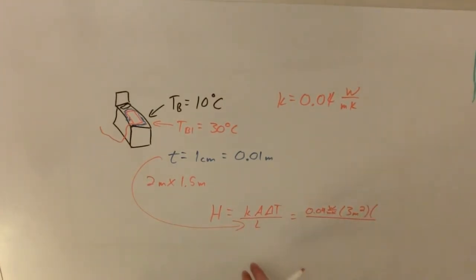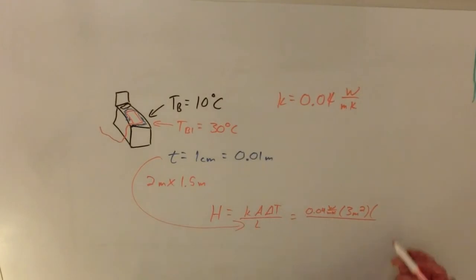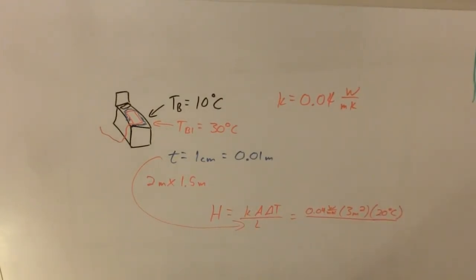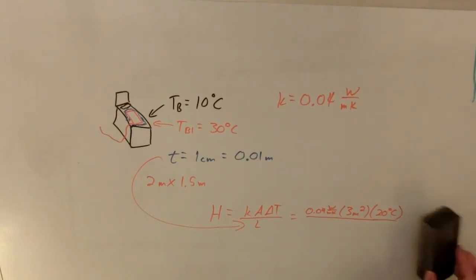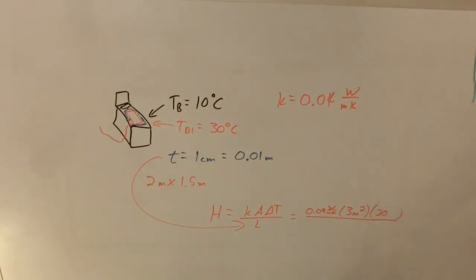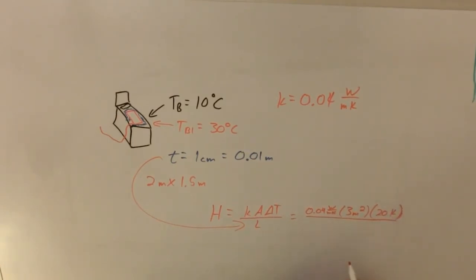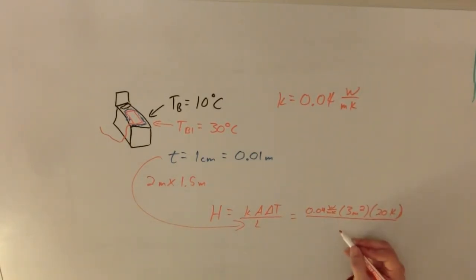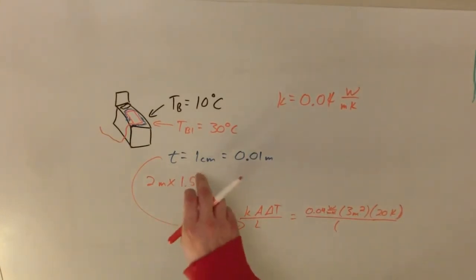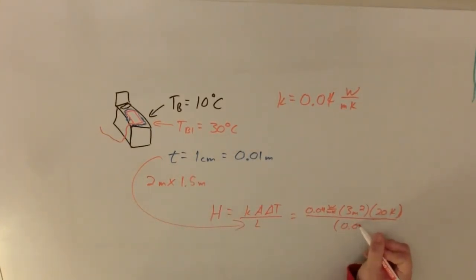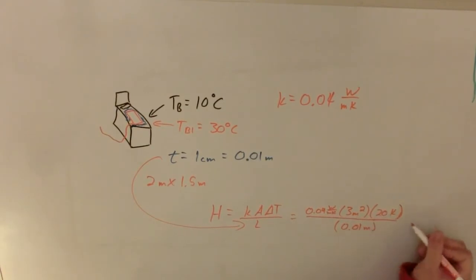Times our temperature difference: 30 minus 10 gives 20 degrees. I'll call it kelvin since that's the unit used in K. The distinction matters because the K value I have is in watts per meter kelvin, though the number would be identical in watts per meter Celsius. Divided by L, the thickness of the sheet: 0.01 meters.